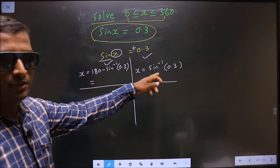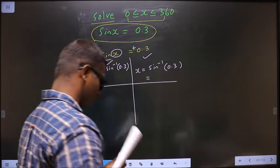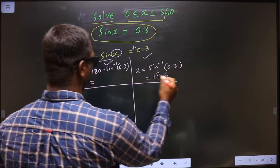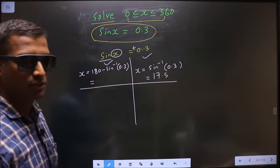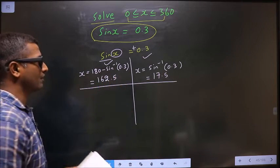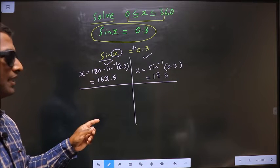Now, you put this in the calculator, you get 17.5 degrees. Put this in the calculator, you should get 162.5 degrees. These are our answers.